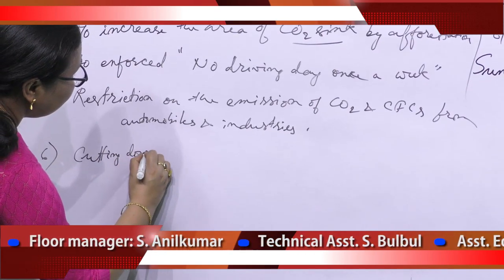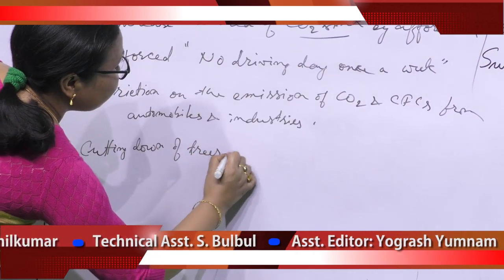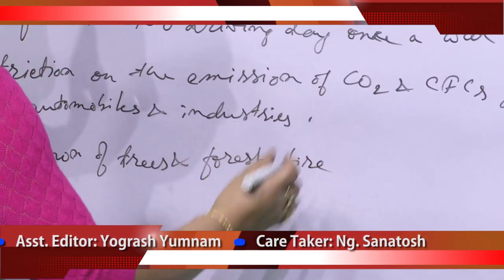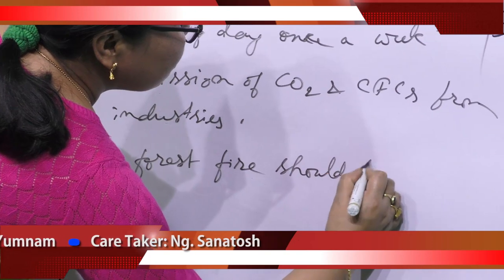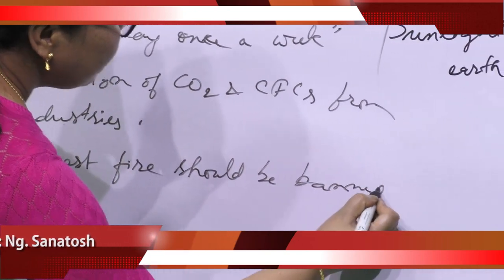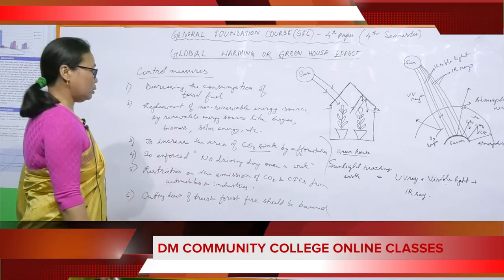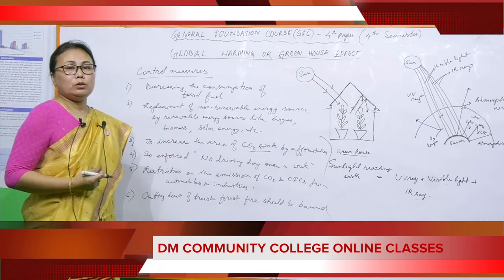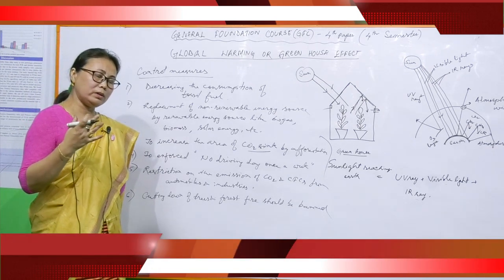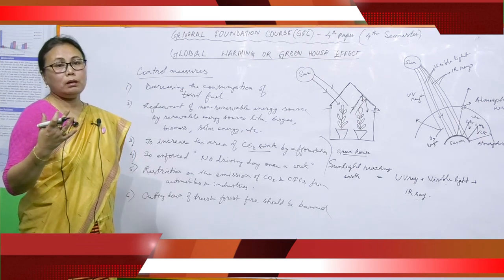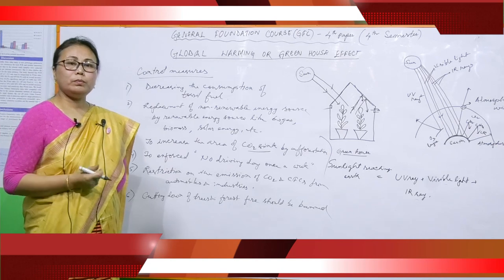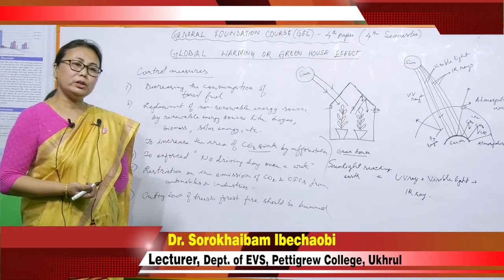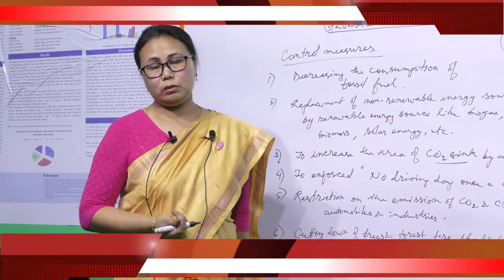Sixth, cutting down of trees and forest fires should be banned. The ultimate measure to control the excessive release of carbon dioxide and other greenhouse gases is greening our landscape. Plant more trees so that we can contribute a little part to reducing the impacts of greenhouse gases on our globe. Thank you.